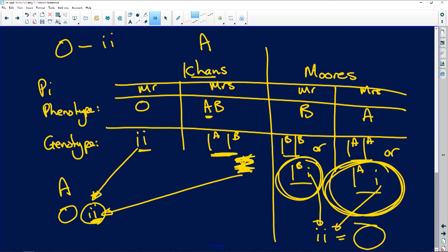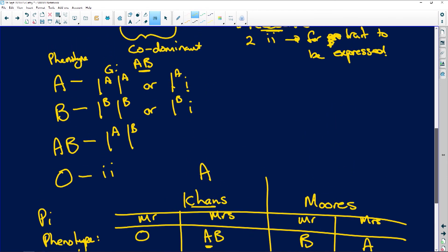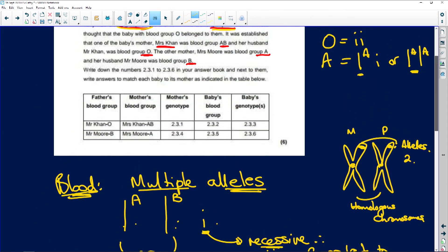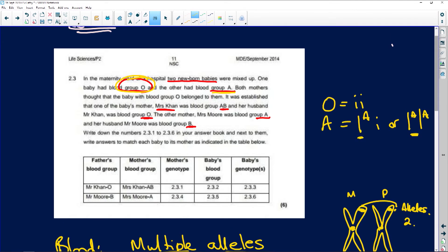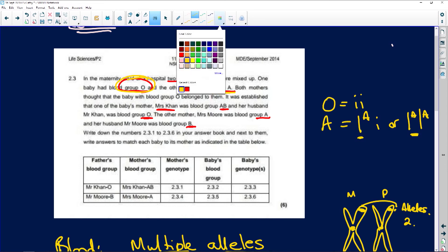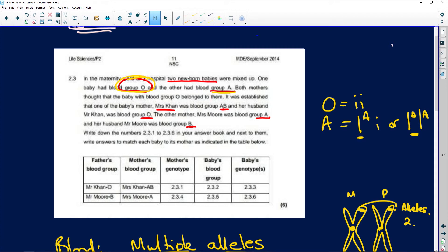So what is the result in our table? Let's see. We said the Khans, because they have... Let's do a different colour here. So it's darker for you to be able to see. So let's do a nice royal blue. So the Khans are O and AB, which means they cannot have a baby that is O. Their baby's blood group must be A.